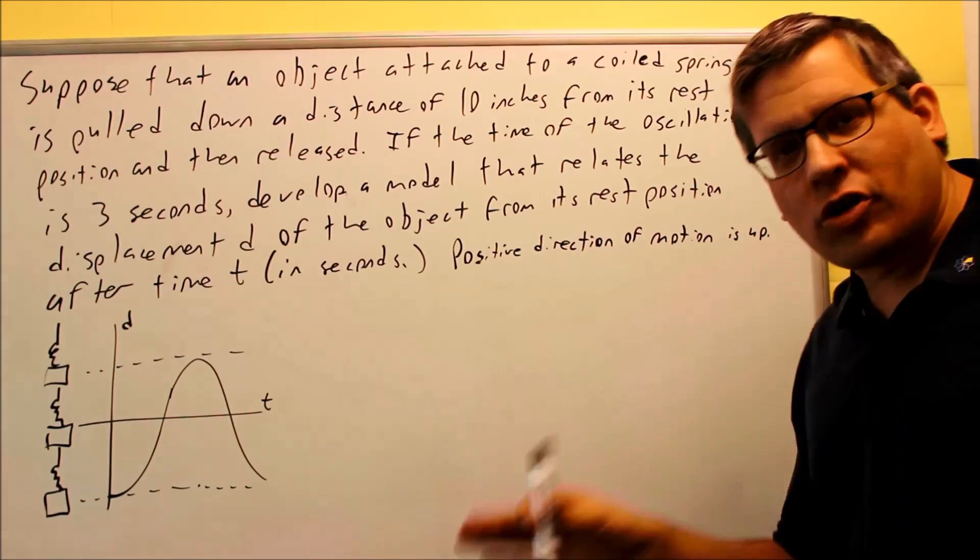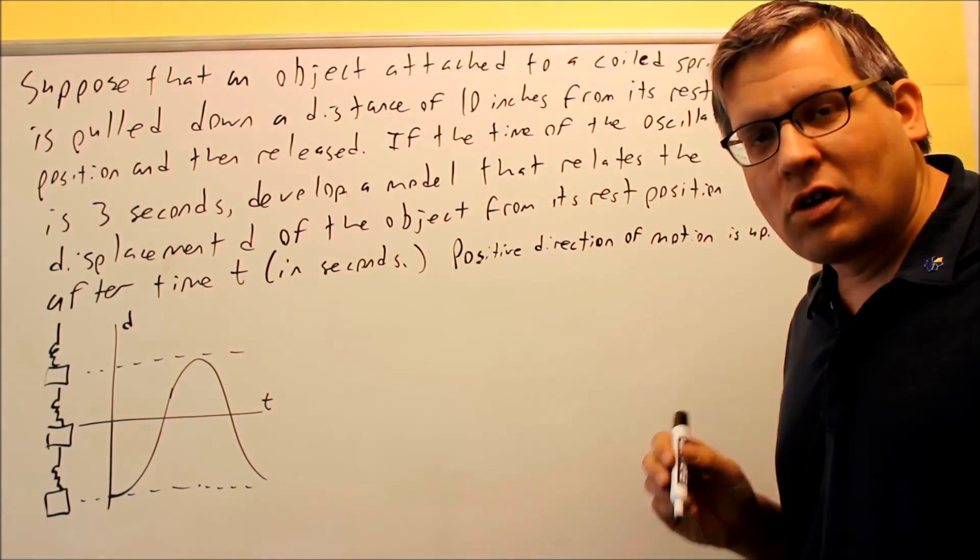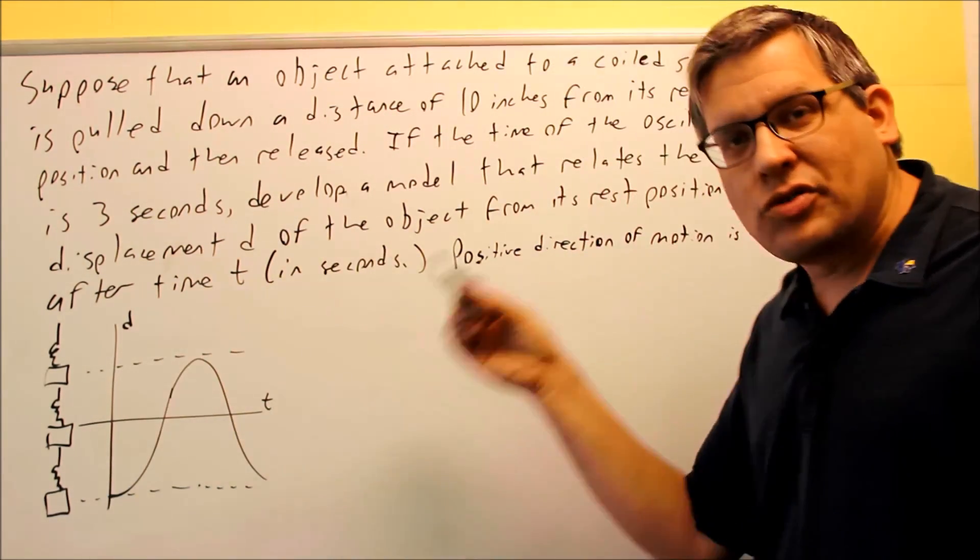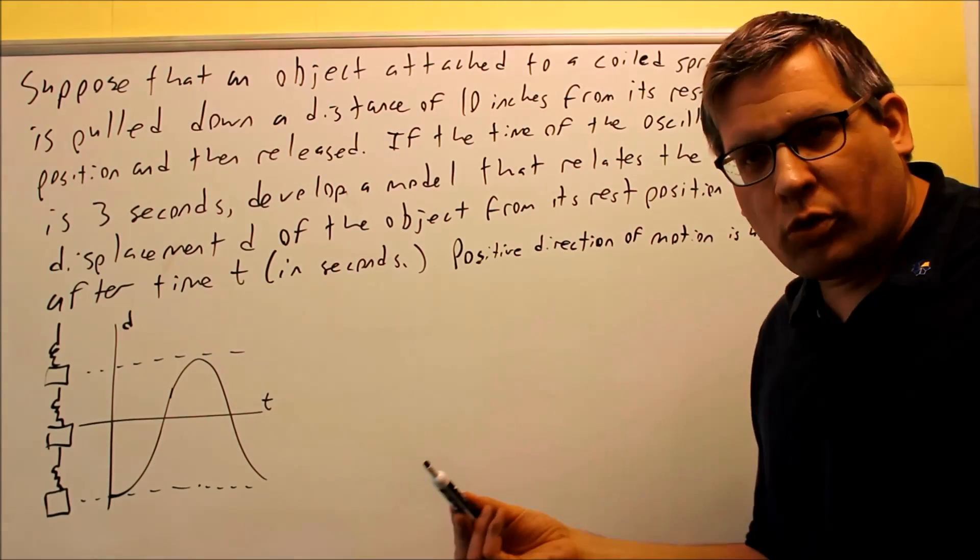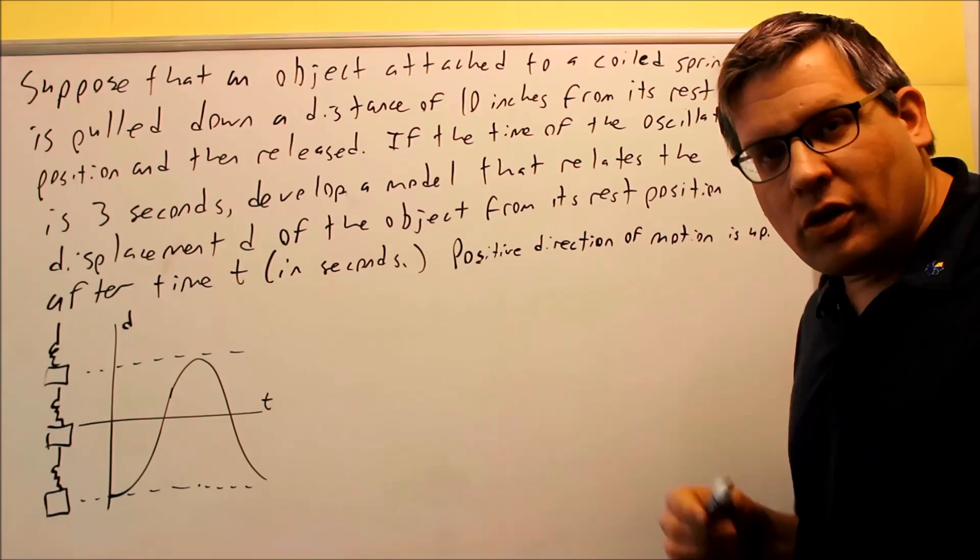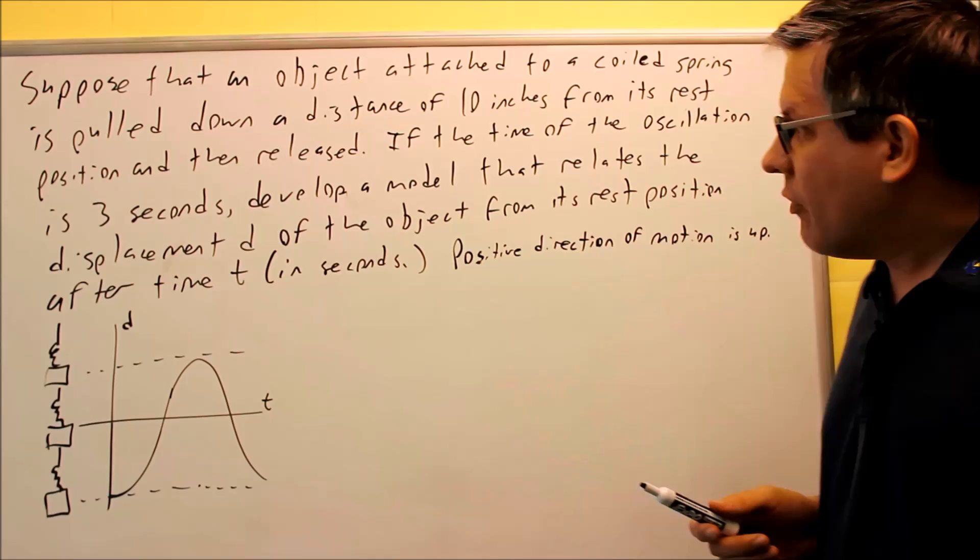We're going to assume that there's no friction or air resistance, and assume that it does keep doing this forever. In actuality, this will go back and forth and eventually level down. That's called damped motion and that's more realistically what it would look like if we had friction and air resistance, but we're going to ignore all that in this case. We'll assume it just keeps going up and down forever.